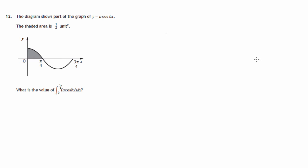This is question 12 from paper 1 of the 2015 SQA Curriculum for Excellence Higher Maths exam. We're shown a diagram which is a cosine graph or a graph related to a cosine graph.